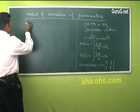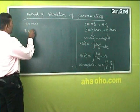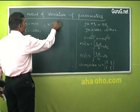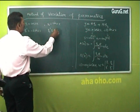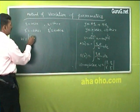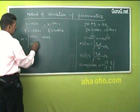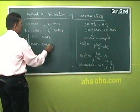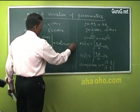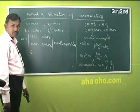The Wronskian W is the determinant of y₁, y₂ and their derivatives y₁', y₂'. With y₁ = cos(2x), we get y₁' = −2·sin(2x); and with y₂ = sin(2x), we get y₂' = 2·cos(2x). Expanding: W = cos(2x)·2cos(2x) − sin(2x)·(−2sin(2x)) = 2cos²(2x) + 2sin²(2x) = 2·(cos²(2x) + sin²(2x)) = 2.